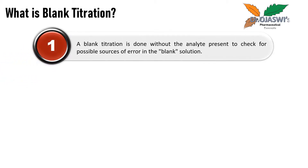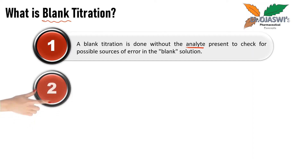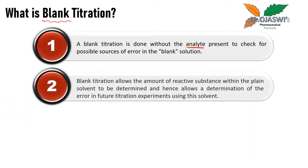What is blank titration? A blank titration is done without the analyte. We do not add the analyte in the conical flask, but we add all other reagents and solvents which we usually use while assaying that particular analyte. Blank titration allows the amount of reactive substance within the blank solvent to be determined, and hence it allows determination of the error in future titration experiments using that solvent.